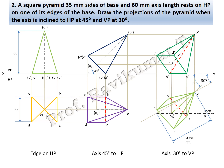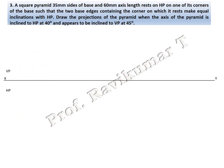Next is the corner condition: 30 mm sides of base, 60 mm axis length, resting on HP on one of its corners, such that two base edges containing the corner make equal inclination with HP. Draw the projection when the axis is inclined to HP at 40 degrees and to VP at 45 degrees. The word 'up here' is present in the problem, which means it is a without-locus problem.